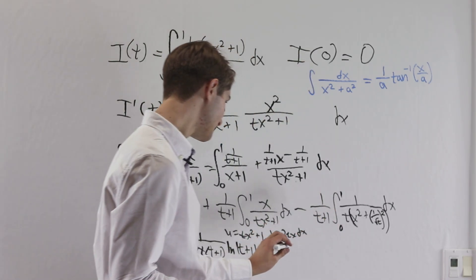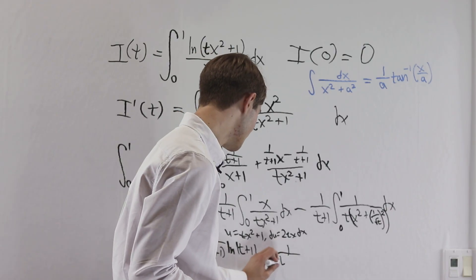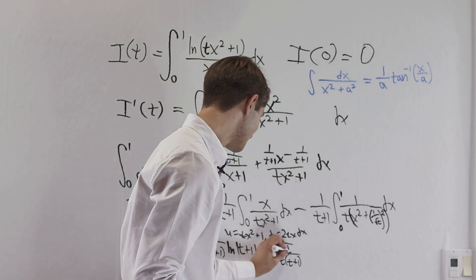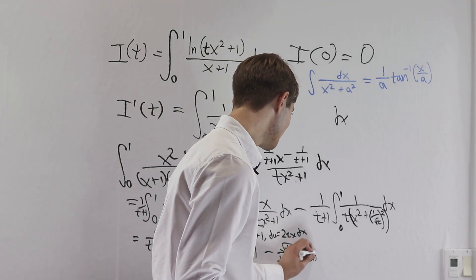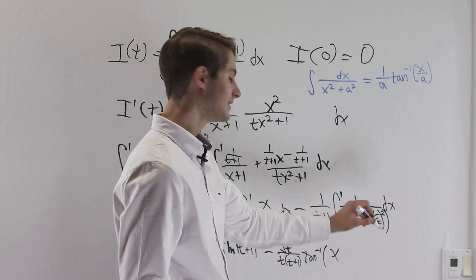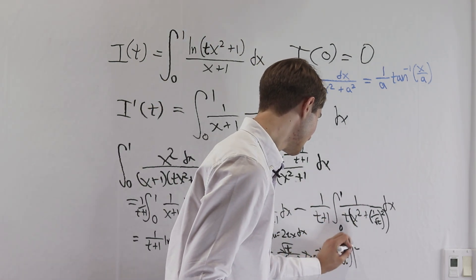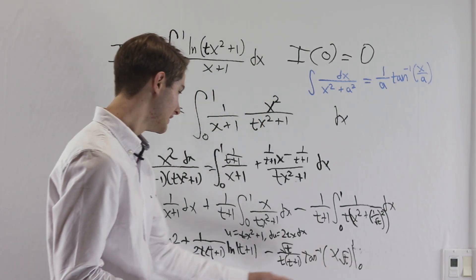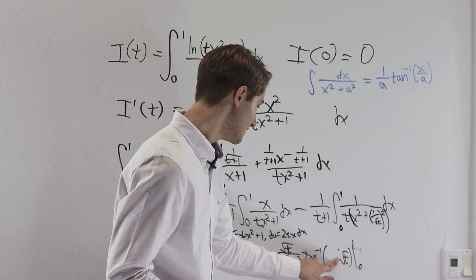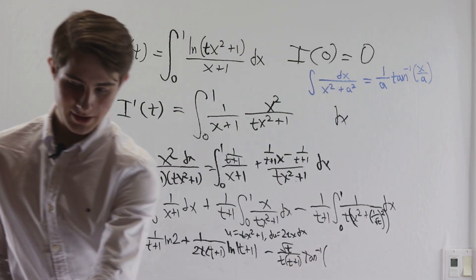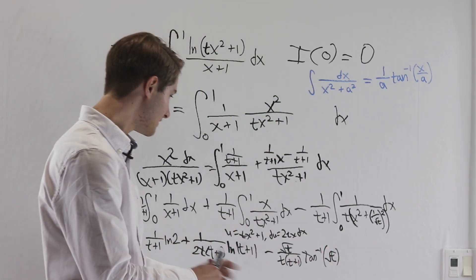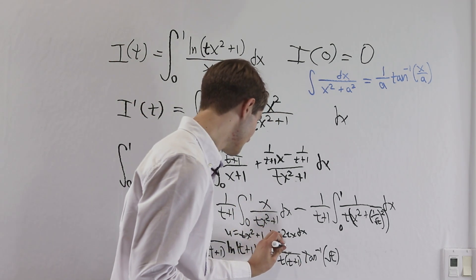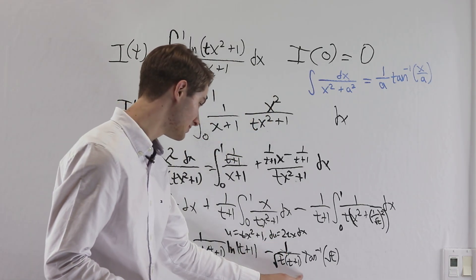Evaluating the third integral gives minus 1 over t(t plus 1) times 1 over (1 over root t), which brings root t to the top. Then we get the inverse tangent of x times root t evaluated at 1 and 0. The inverse tangent of 0 is 0, and plugging in 1 gives the inverse tangent of root t. Simplifying, root t divided by t is 1 over square root of t, so we get minus 1 over (square root of t times (t plus 1)) times the inverse tangent of root t.